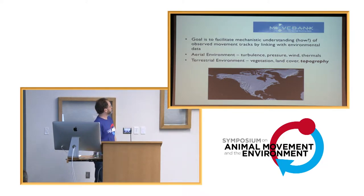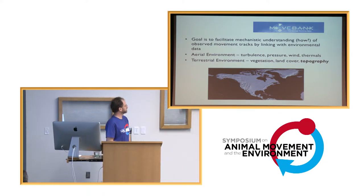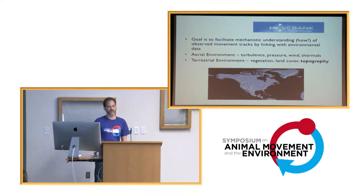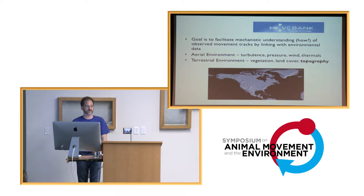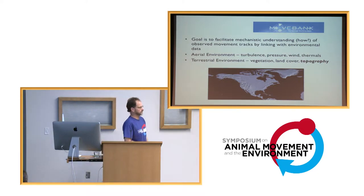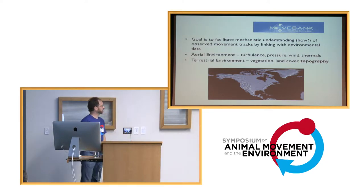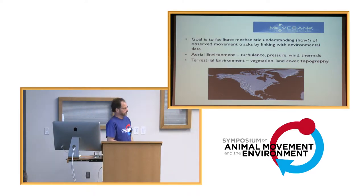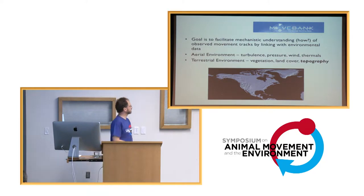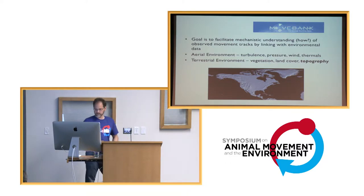We're interested in both the aerial environment and the terrestrial environment: atmosphere, turbulence, pressure, humidity, wind, and thermal lift — all critically important depending on the species. The terrestrial environment for many species links to movement ecology via vegetation and land cover. I'm going to focus on topography with this talk.